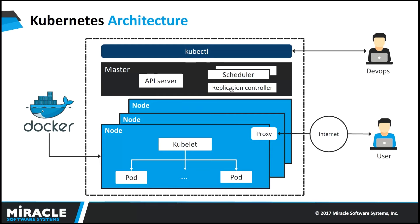One of the features of Kubernetes is auto scaling of pods, done by the replication controller component. All you need to do is specify the number of pods, the container images that need to be started on them, and rules for launching or bringing down the pods. The controller will take care of scheduling the pods on the nodes.